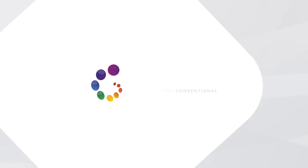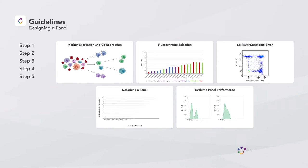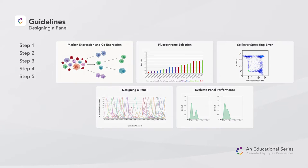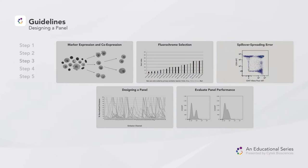Welcome to SciTech Biosciences' full-spectrum profiling educational series on panel design best practices. In this video, we will apply the concepts discussed in the previous videos. As a reminder, video 1 discussed gathering information about the scientific question, populations of interest, and marker expression. The second video outlined the importance of understanding fluorochrome uniqueness and brightness, while the third video covered the importance of understanding spread.